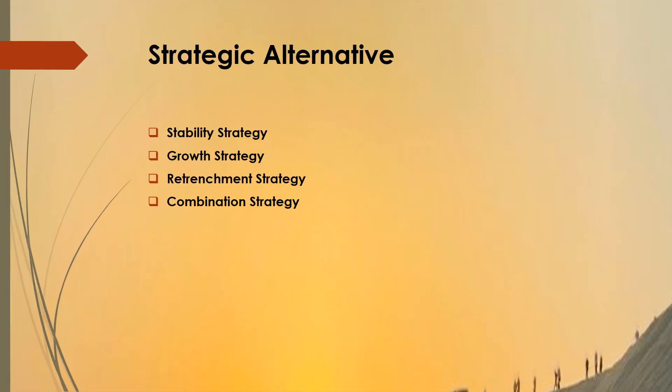The next step is identification of strategic alternatives. Different types of strategies are available for an organization to choose from. It may be a stability strategy, growth strategy, retention strategy, or more than one strategy may be used in combination. The organization has to analyze different aspects and choose one among these identified alternatives.